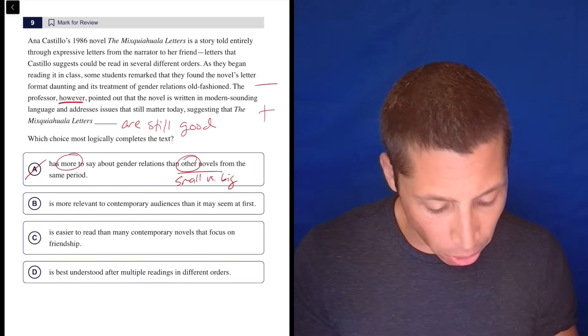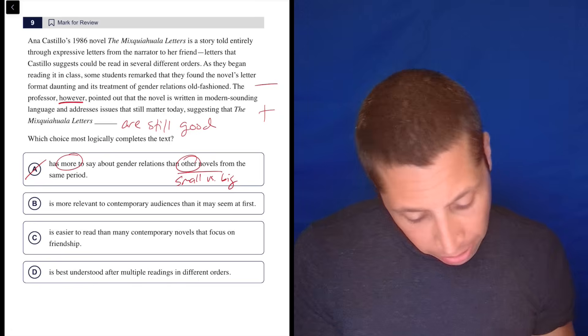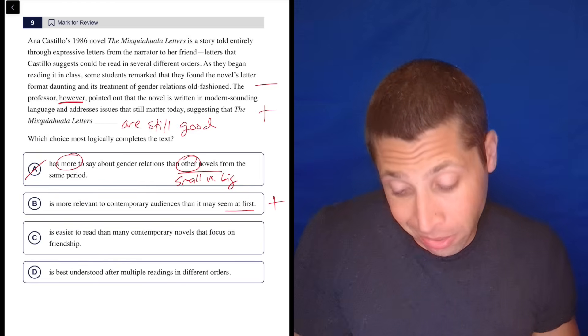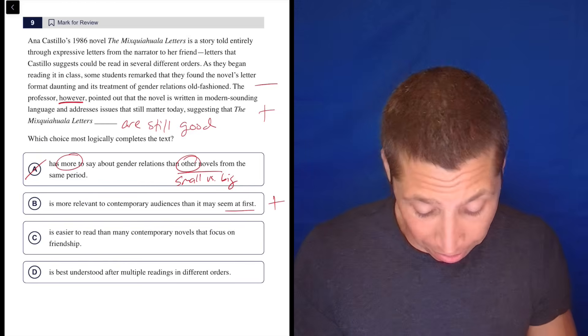Two, B: is more relevant to contemporary audience than it may seem at first. Okay, that sounds pretty positive with a kind of little maybe-it-seems-negative to it. So in terms of connotations, I kind of like that. Let's move on to C, though.